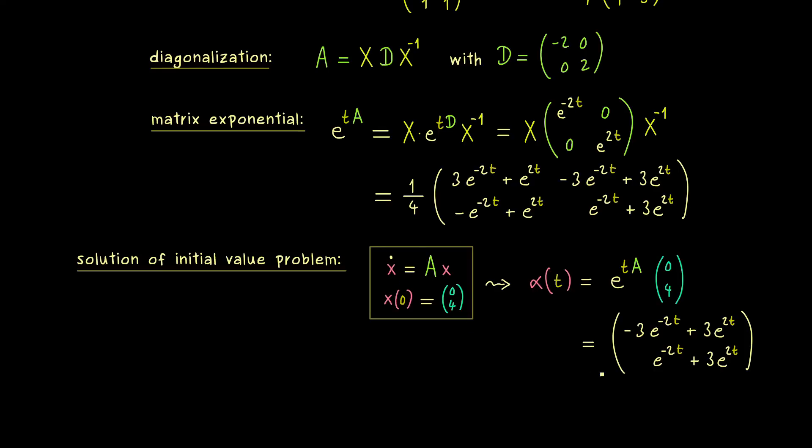However, this whole procedure only works in the case that A is a diagonalizable matrix. So naturally, your next question would be what to do in all the other cases. And there I can also tell you that we already have the linear algebra tools for that as well. The correct substitution for this diagonal matrix is the so-called Jordan normal form. And indeed, how to apply this I will show you in a future video. So I really hope we meet there again and have a nice day. Bye bye.